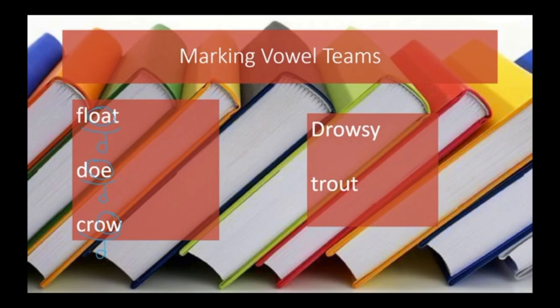In the word drowsy, you have DROW-ZEE — that Y is actually a suffix, but your OW is your double vowel. In the word trout, we have OU, and that is our double vowel.